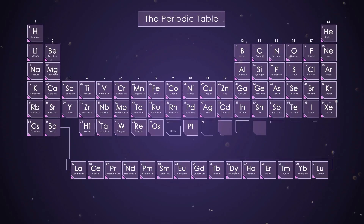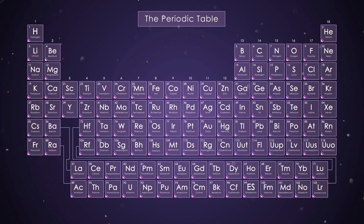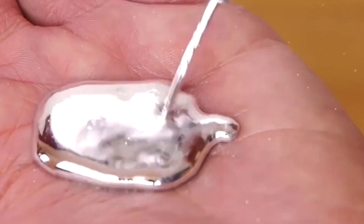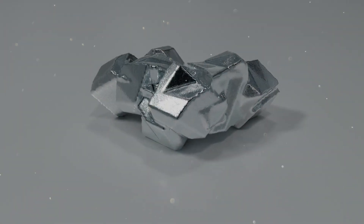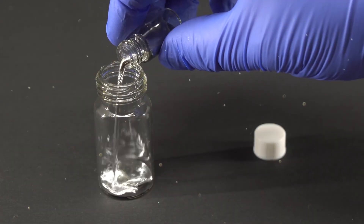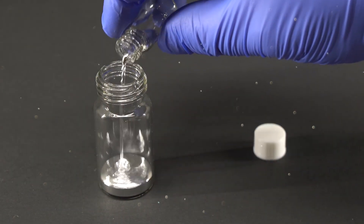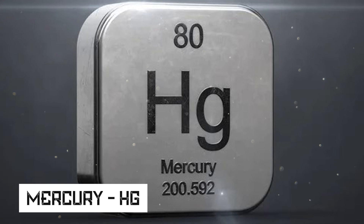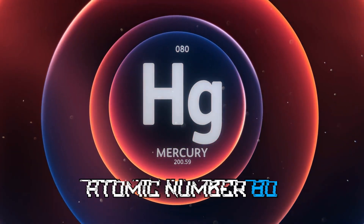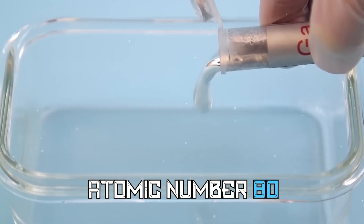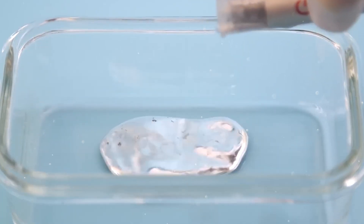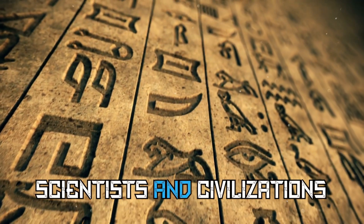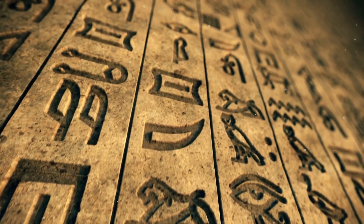Did you know there's a metal on the periodic table that acts like a liquid at room temperature? It's called mercury, and it's pretty darn fascinating. Represented by the symbol Hg and atomic number 80, this dense metal has been a source of curiosity for scientists and civilizations for centuries.